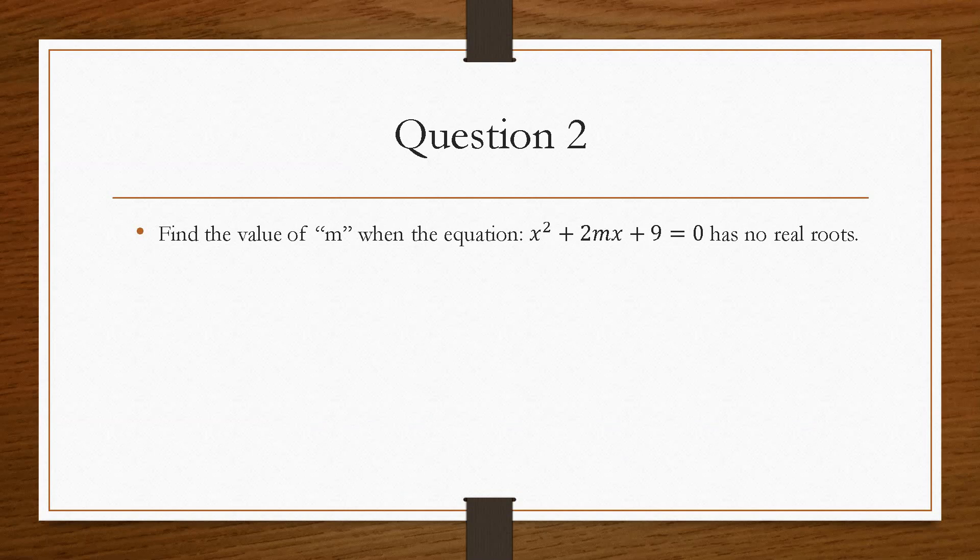Question two is a problem solving question in that it gives us an unknown value of m. And it tells us exactly what condition has to be met. So in this case, it's saying that we have no real roots.